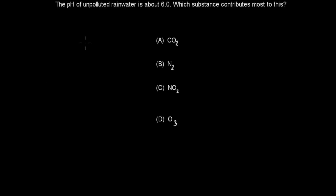The first question: the pH of unpolluted rainwater is about 6.0. Which substance contributes most to this? A, CO2. B, N2. C, NO2. D, O3.